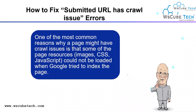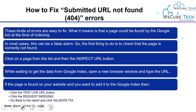How to fix URL has crawl issue: One of the most common reasons why a page might have a crawl issue is that some page resources — your images, CSS, JavaScript — could not be loaded when Google tried to render the page. How to fix submitted URL not found: These kinds of errors are easy to fix. It means that a page could not be found by the Googlebot at that time. In most cases, this can be a false alarm. The first thing to do is check that the page is correctly found by copying that link and doing a live test.